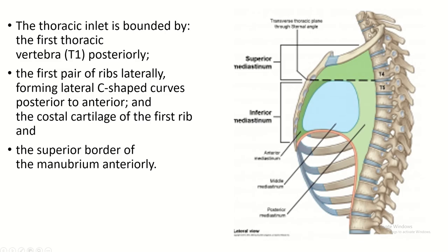The boundary of the thoracic inlet: posteriorly the first thoracic vertebra, laterally the first rib and costal cartilage, and anteriorly the superior border of the manubrium sterni.